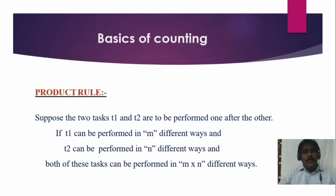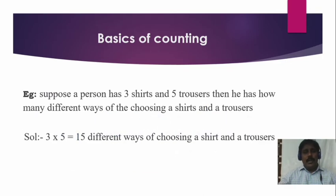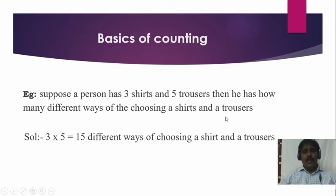Here is an example of the product rule. Suppose a person has three shirts and five trousers. Then he has how many different ways to choose a shirt and a trouser? By using the product rule, simply 3 into 5 equals 15 different ways. So he can choose in 15 different ways by the help of the product rule.